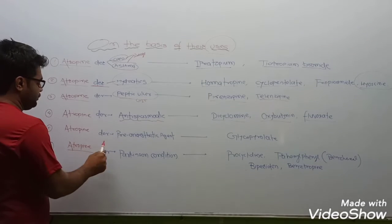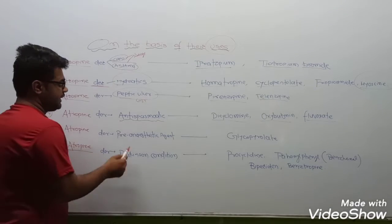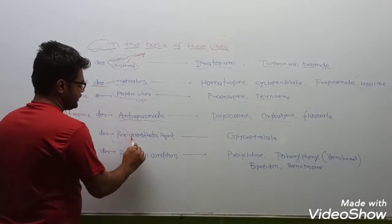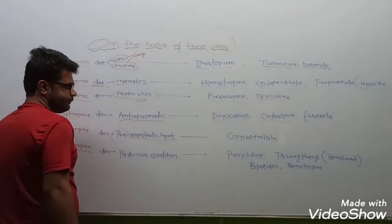Atropine derivatives which are used as pre-anesthetic agents — this is a very important point. The drug used is glycopyrrolate.